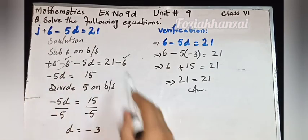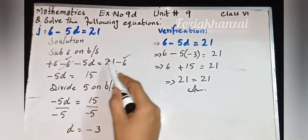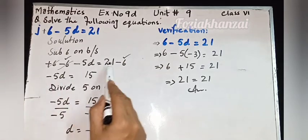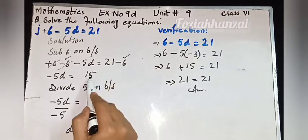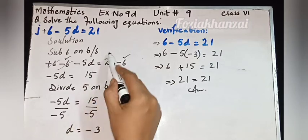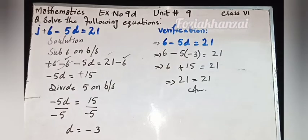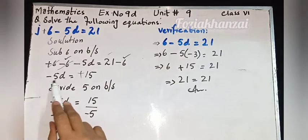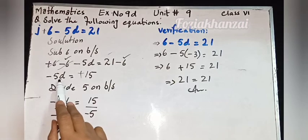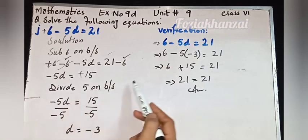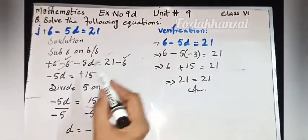Subtract 6 on both sides. After reducing, plus and minus cancel. Remaining: minus 5d is equal to 21 minus 6 is 15. So minus 5d is equal to 15. Now we have multiplicative property for 5d.